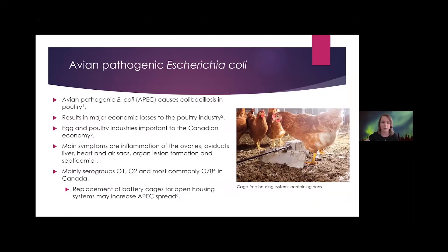So let's start with the disease. Avian pathogenic E. coli causes colibacillosis in laying hens. It's a disease marked by inflammation of various soft tissues, as well as organ lesion formation on major organs like liver, and it can also lead to septicemia in acute cases.